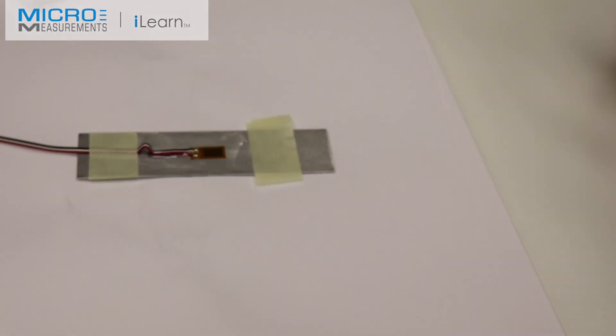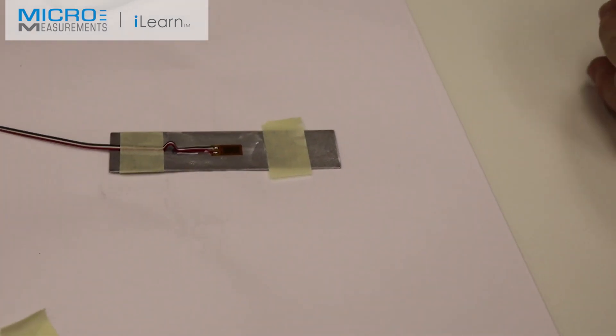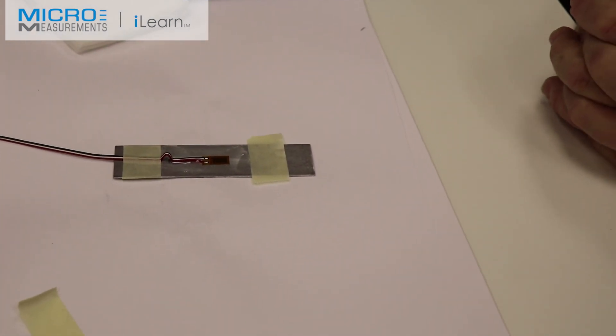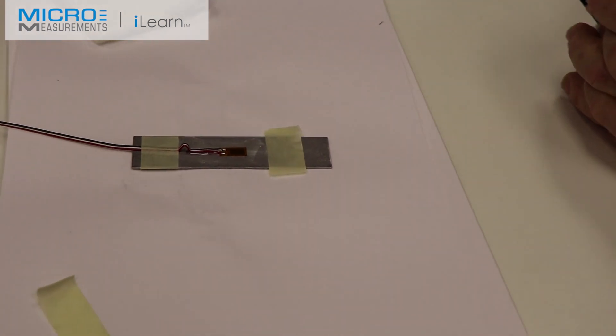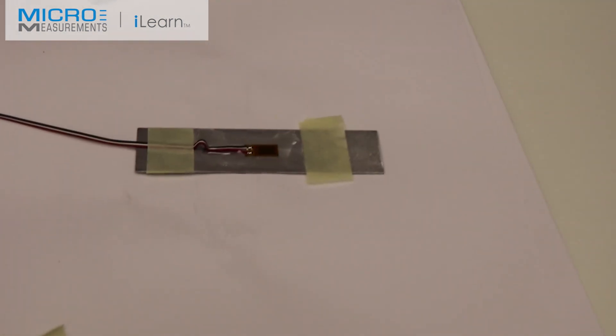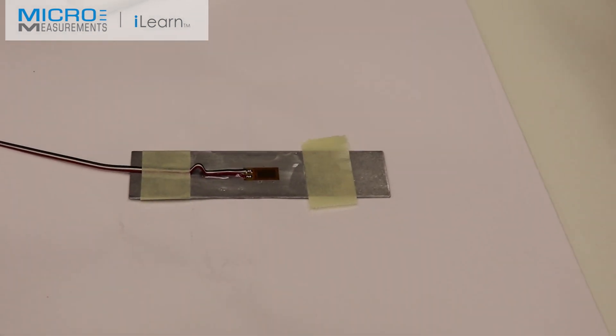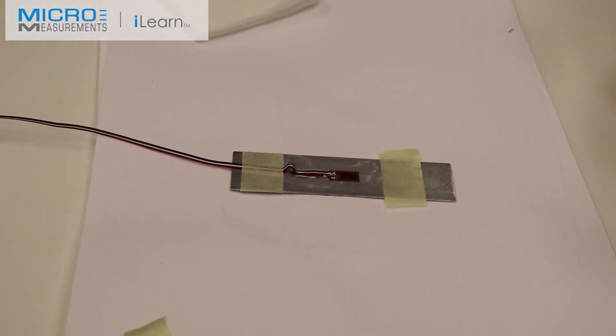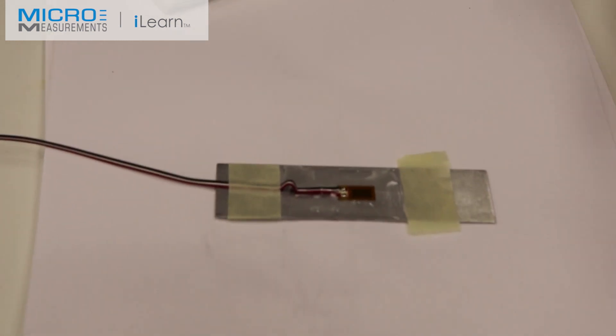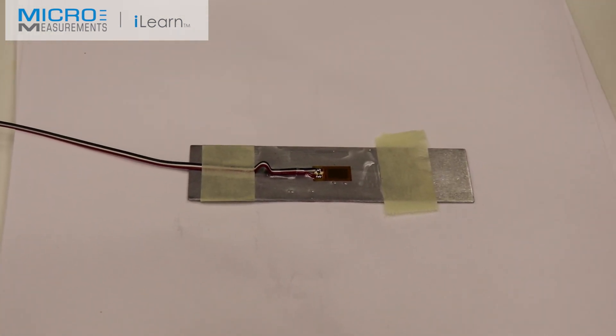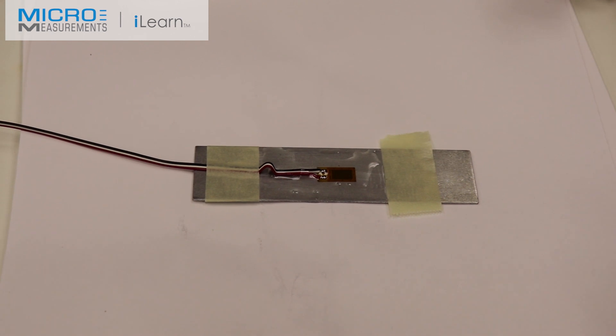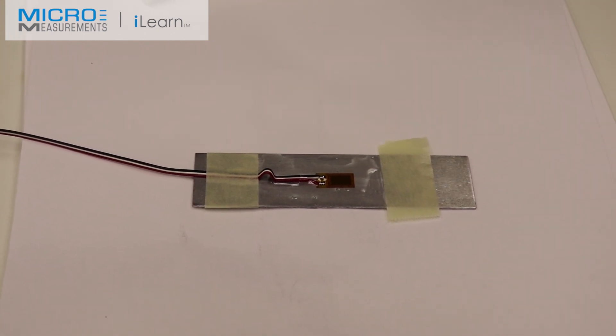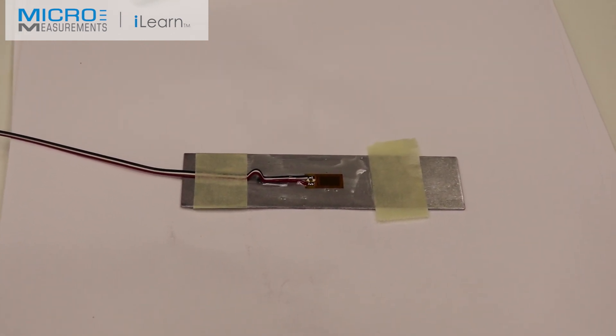This will air dry in about 15 minutes. Most of the solvents will be gone. However, it will take overnight before it fully cures. And this is a CEA advanced sensor installation. Notice the similarities to the standard or traditional CEA series strain gauge. If you didn't know any different, you wouldn't know any different. Welcome to the advanced sensor CEA strain gauge.